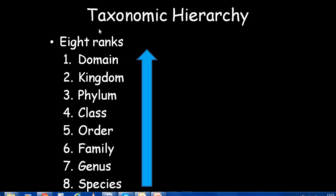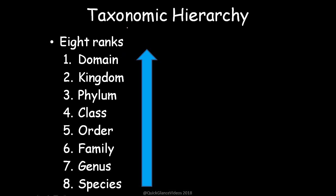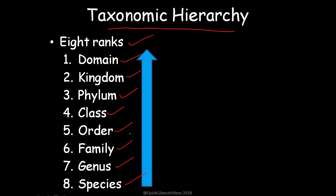Now we come to taxonomical hierarchy. There are eight ranks or categories: first is domain, kingdom, phylum, class, order, family, genus, and species. These are the eight ranks. We will see each in detail with some examples in coming slides.